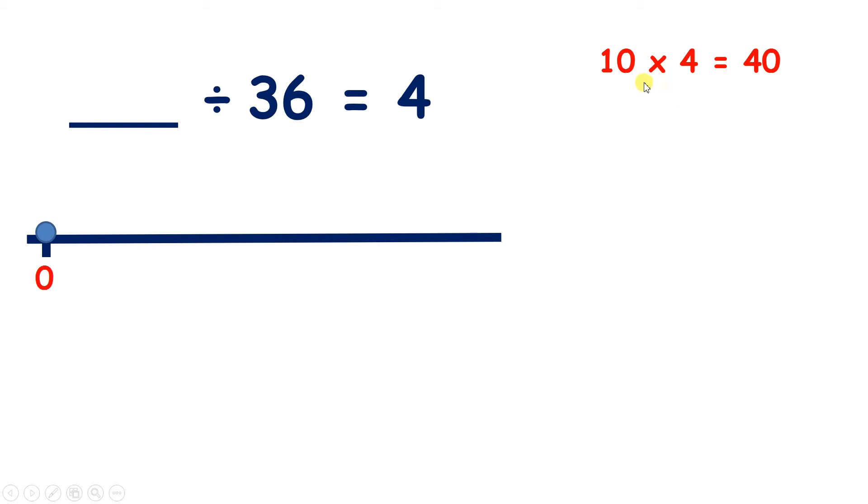So if we know 10 times 4 is 40, another 10 fours gives us 20 times 4, which is 80, and another 10 fours gives us a total of 30 fours, which is 120.